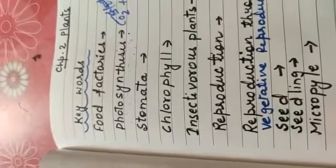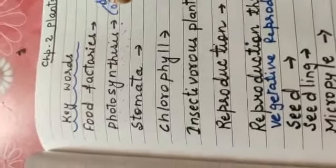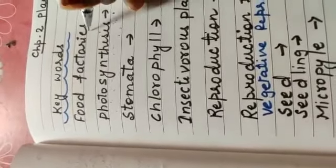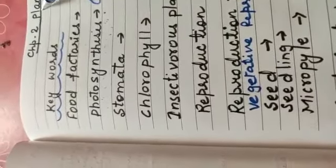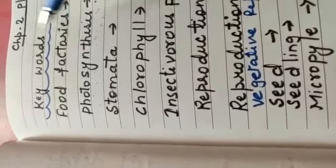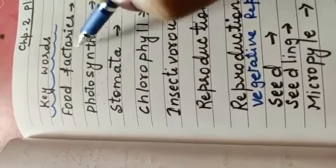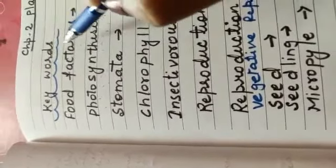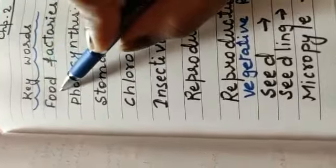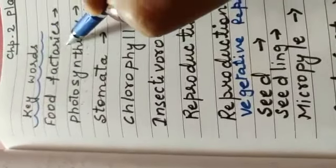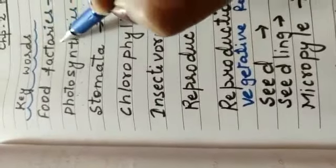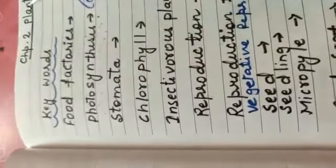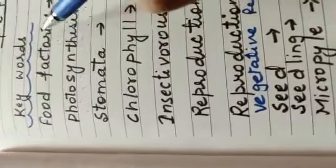The keyword is food factories — factories that make food. And what are those factories? The plants. The leaves which prepare food for the plant are called food factories.